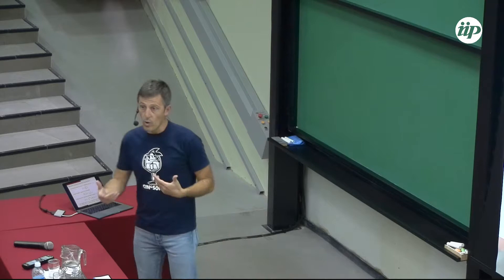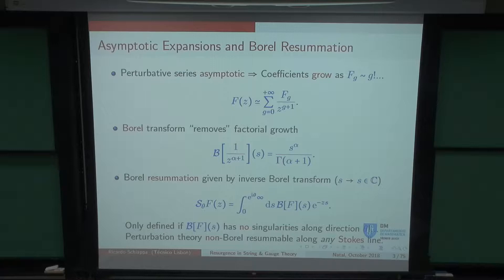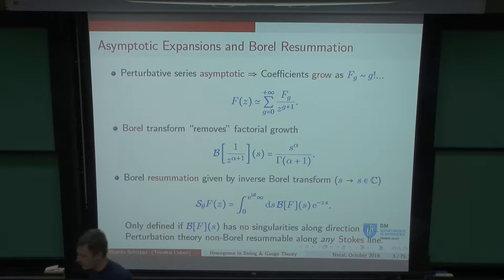One way around it, also known for a long time, is to use the Borel transform, which is basically a machine that cuts the factorial growth. What's left is the sub-leading growth of those coefficients, which is exponential. Because it's exponential, it has a positive radius of convergence. So I can define my Borel transform on a disk on the complex plane and then do analytic continuation throughout C.